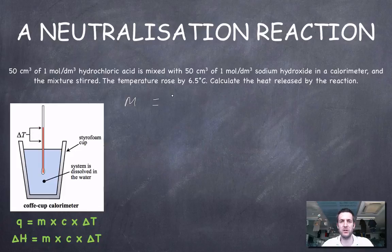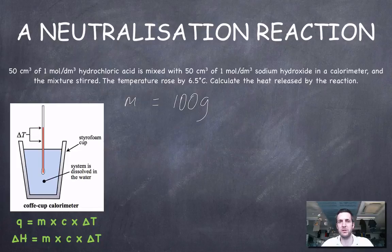If you think about it, most of these one mole per liter solutions - the vast majority of them is water. So if we approximate them to behave just like water, then we can say that the mass of water here is 100 grams because we've taken 50 centimeters cubed of basically water and added 50 centimeters cubed of what is basically water. This reaction is going to take place and heat the water. So we've got 100 grams of water.